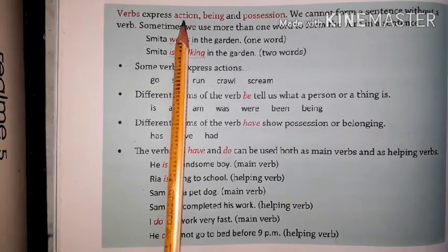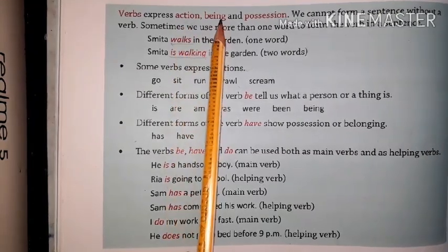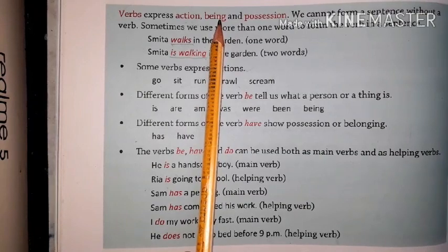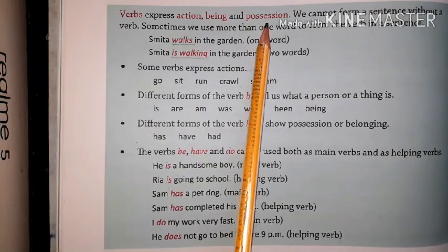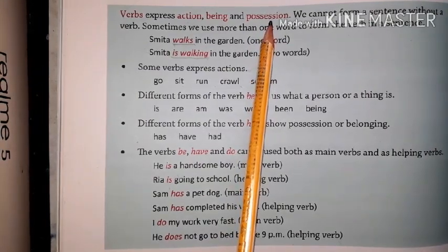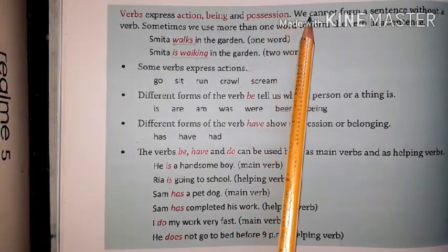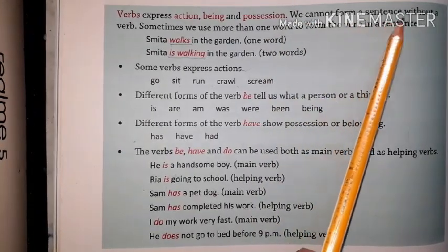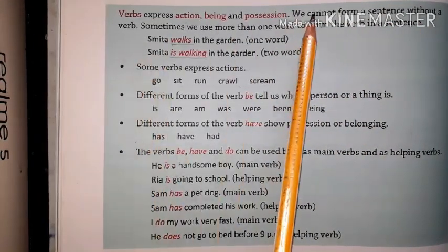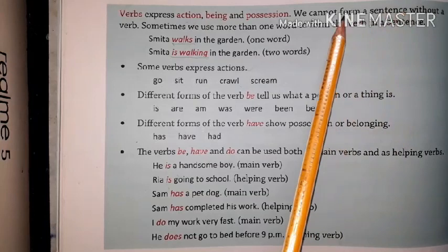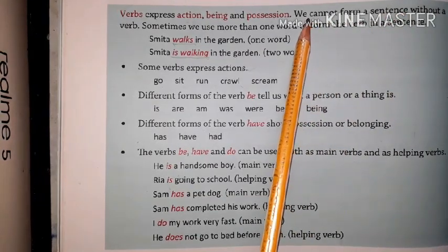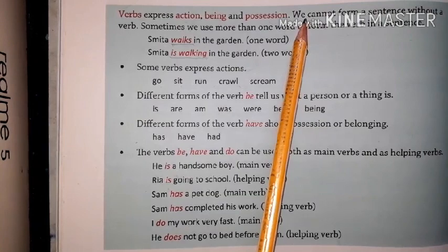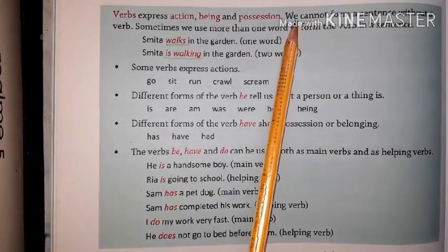play, reach, teach, laugh. And what is being? Being includes is, am, are, was, were. And what is position? Position includes has, have, and had. We cannot form a sentence without a verb. Every sentence has a verb — without a verb, there is no sentence.